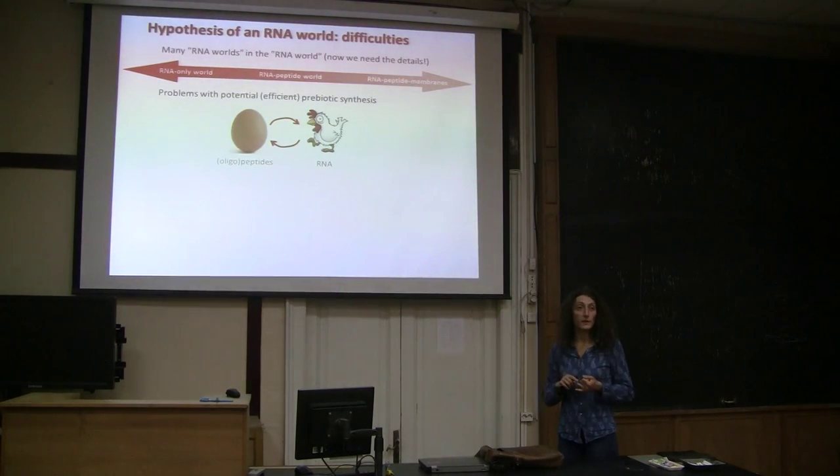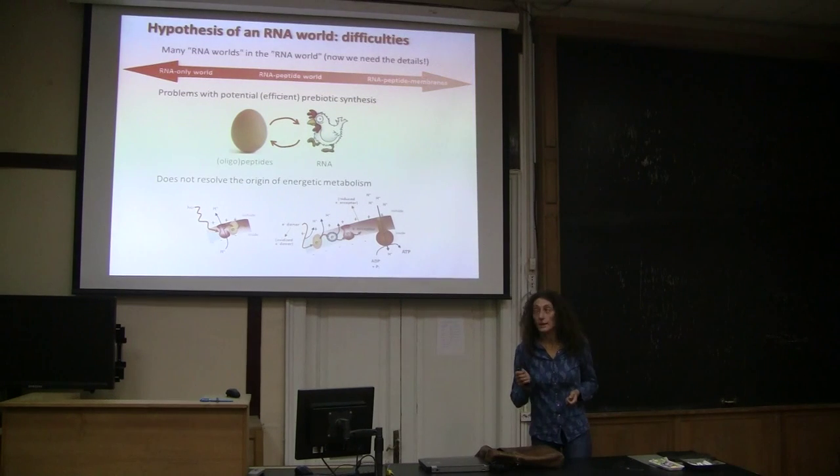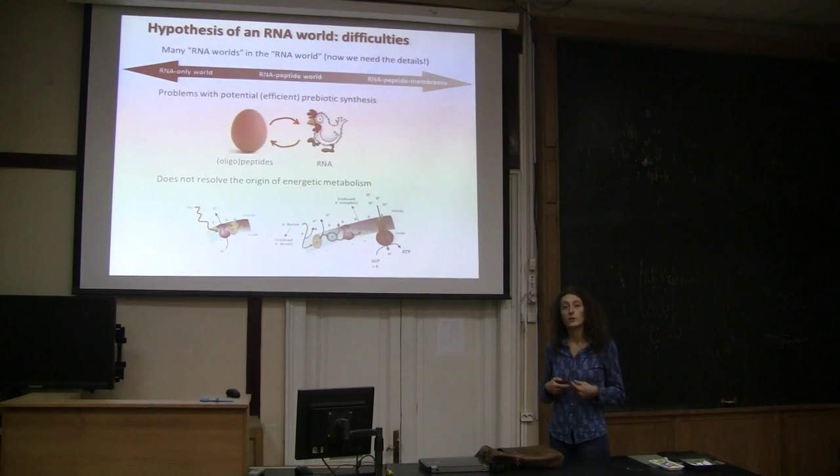And also, because amino acids were there. We know that amino acids are in meteorites and are everywhere. So amino acids and small peptides must have been there before RNA, must have been there from the beginning. And also, the other problem of the RNA world is that it does not resolve the origin of energetic metabolism.